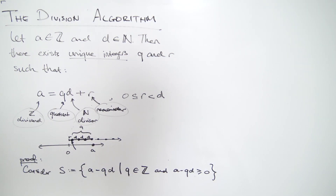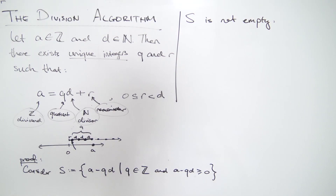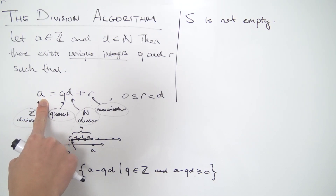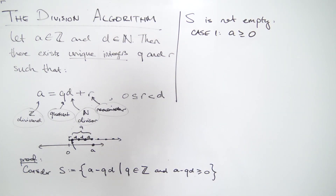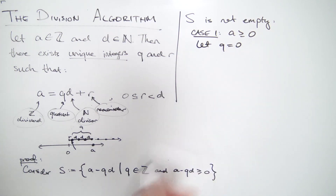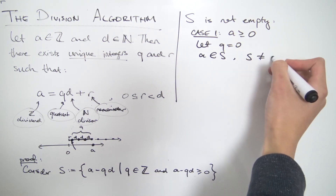Now the idea is to choose the smallest element in this set. There's a principle called the well-ordering principle, which states that any subset of the positive integers has a least element. So this set S, which is clearly a subset of the positive integers, has a least element — and we call that least element R. For S to have a least element, S must not be empty. To show S is not empty, we consider two cases. Case one: A is greater than or equal to zero. We simply let Q equal zero, and then A minus QD equals A, which is positive, so A is in the set. Therefore S is not empty.